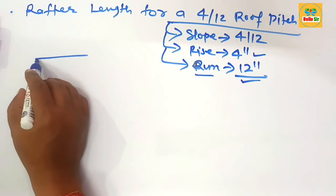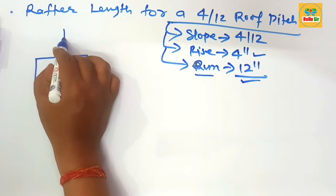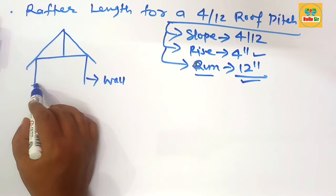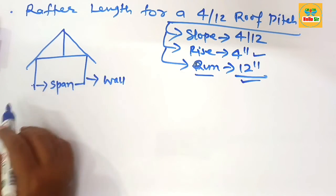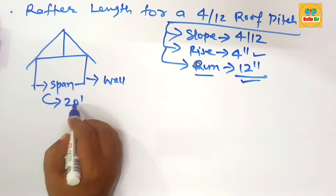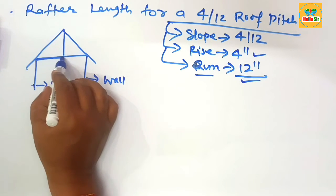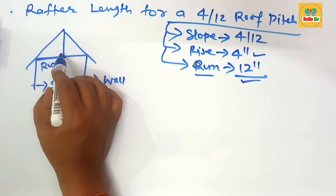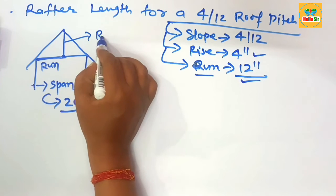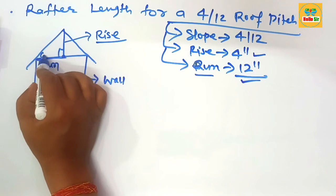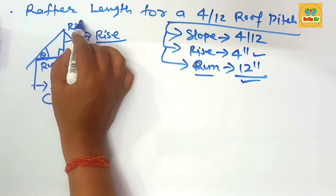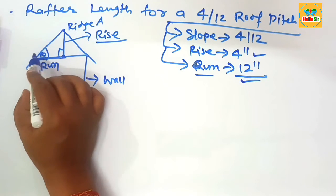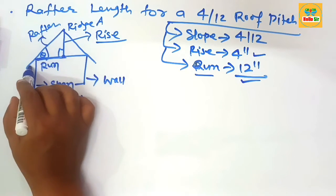First, let's make a rough diagram to understand the different parts of the roof structure. These are the supporting walls, and the distance between the two walls is the roof span. Suppose the roof span is about 20 feet. Half of the span is the run. From the center of the span to the ridge area is the rise, forming a right angle triangle. The slope structure from the ridge area to the top wall is known as the rafter, and this section is the overhang area.